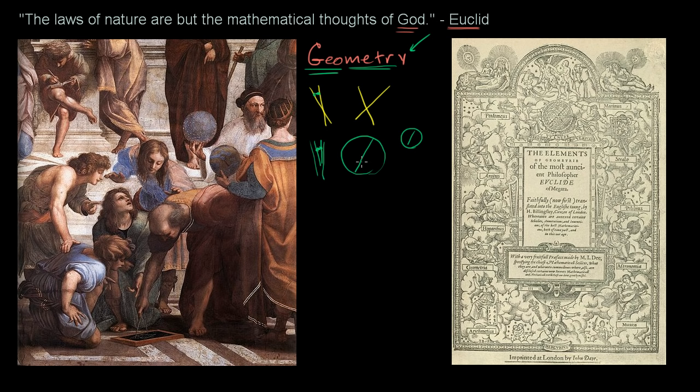And then once you got to the early Greeks, they started to get even more thoughtful, essentially, about geometric things when you talk about Greek mathematicians like Pythagoras, who came before Euclid.